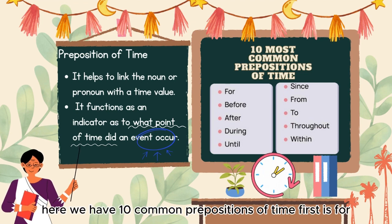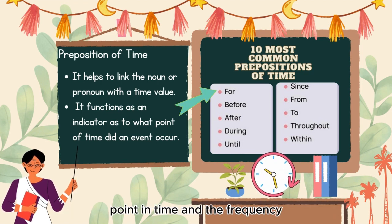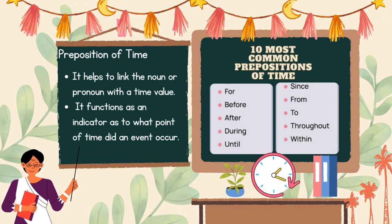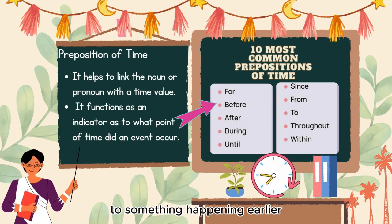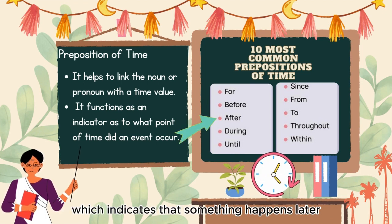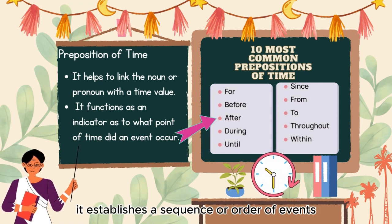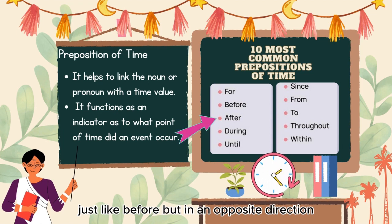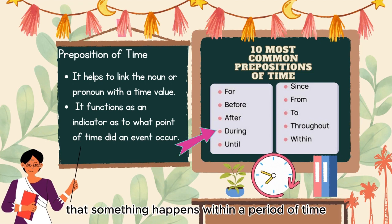Here are 10 common prepositions of time. First is 'for,' which indicates the length of time, a point in time, or the frequency of something. Second is 'before,' which refers to something happening earlier than another point in time, indicating a sequence or order of events. Then we have 'after,' which indicates that something happens later than another point in time, establishing a sequence in the opposite direction. Next is 'during,' which indicates that something happens within a period of time.